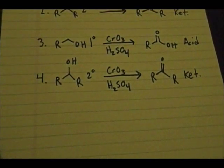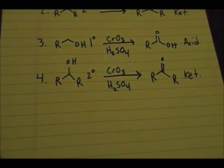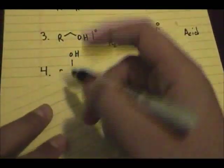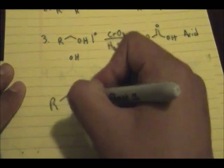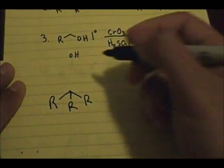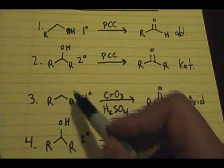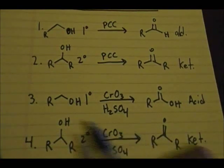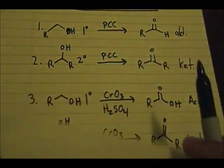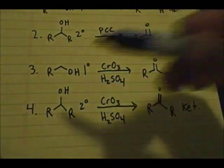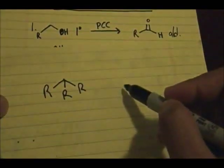Earlier I said I'd explain why we can't use a tertiary alcohol to form a carbonyl compound. In all of these reactions, the R group has not been touched — it remains in the product. The number one thing we lose in every reaction is the hydrogen.